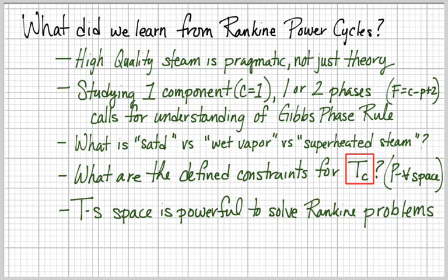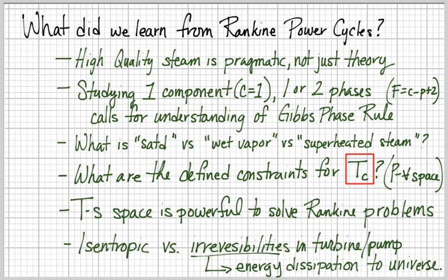We can then adjust from ideal to real using an isentropic efficiency factor. Isentropic would be a reversible process, but in a real turbine you're going to have irreversibilities, irreversible processes. An irreversible process leads to an increase in entropy based on the Clausius inequality, and that increase in entropy is happening because energy is being dissipated. The area under the curve is being spread out wider and dissipated into the universe.